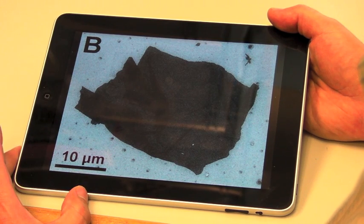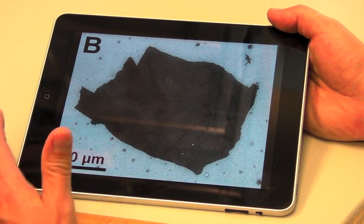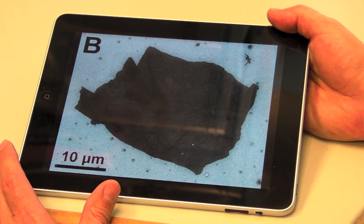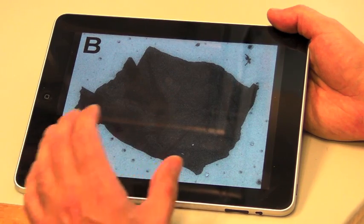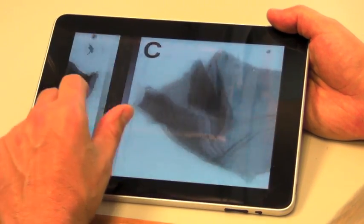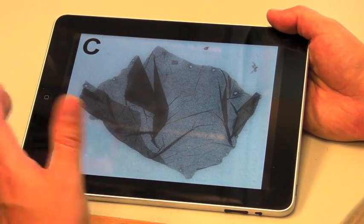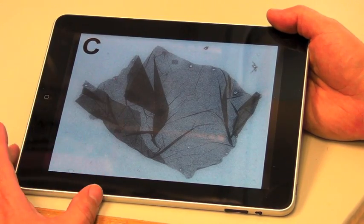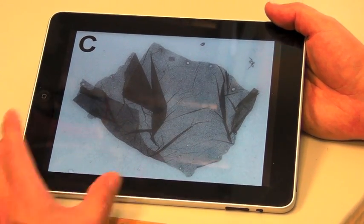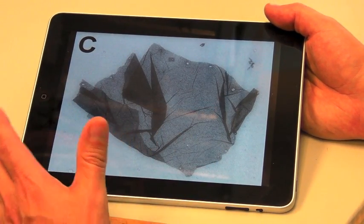First, one treatment was applied to this GO flake. After applying one treatment, the flake changes its appearance. It appears transparent. It becomes more transparent.